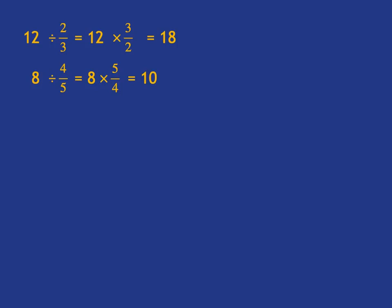The important thing I want you to note is that dividing by 2 over 3 is the same as multiplying by 3 over 2. Dividing by 4 over 5 is the same as multiplying by 5 over 4. So, dividing by a over b is the same as multiplying by b over a.